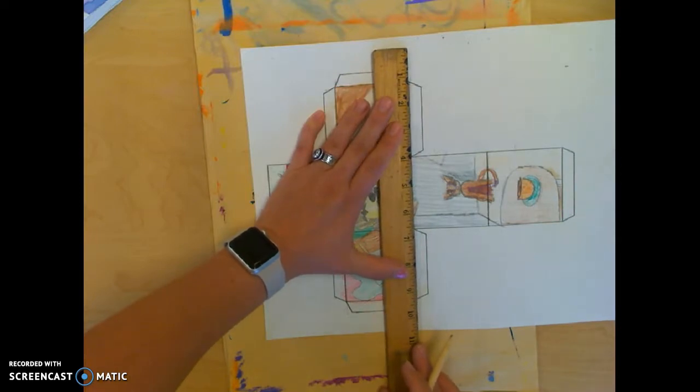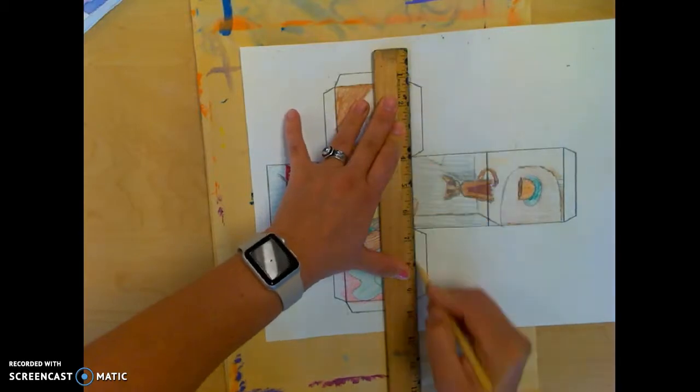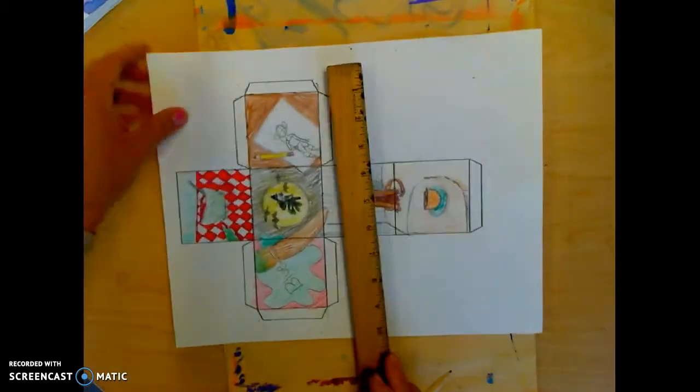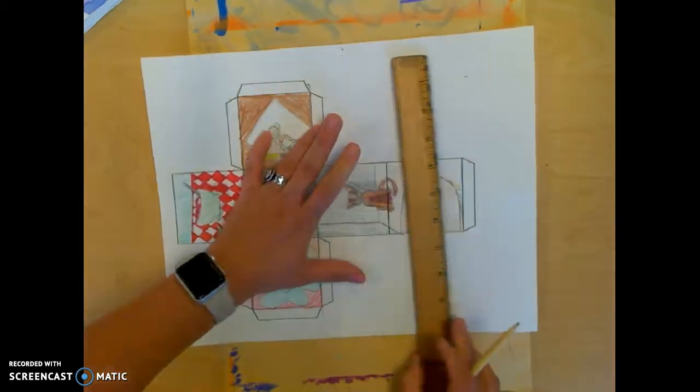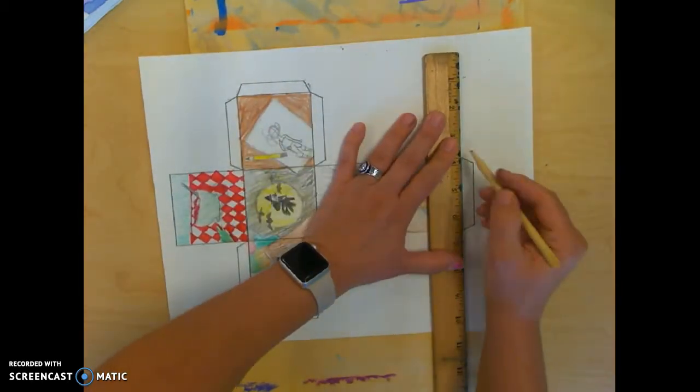Line it up. Press hard on your left hand to make sure that the ruler doesn't move. It needs to stay in place right here. And then I'm also going to do it on the folds for the tabs.